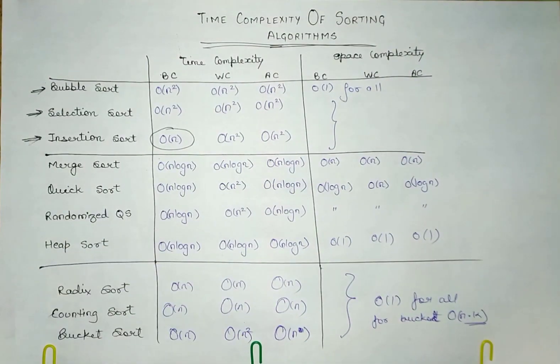Insertion sort best case is order of n. This case arises when the array is almost sorted or already sorted. In that case we just have to scan the array once and we are done.